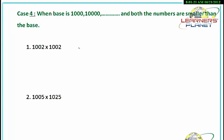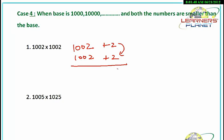Let's discuss more cases when the base is 1000 or 10000 and both numbers are smaller than the base. Let's begin with the first example: 1002 into 1002. We get the difference from 1000 — it is two more than that, and also two more. Two twos are four, but we should be careful about the base. Since there are three zeros in 1000, this multiplication must fill up three digits, so we put two zeros there.